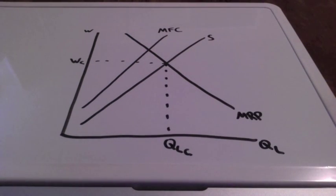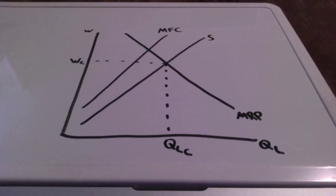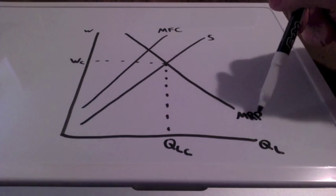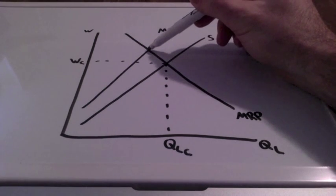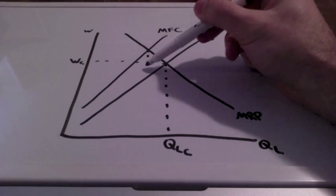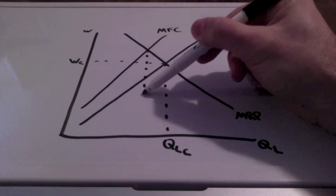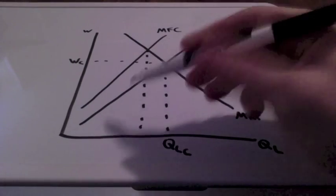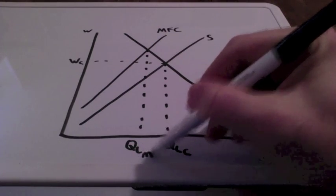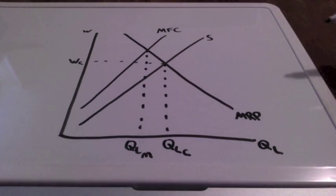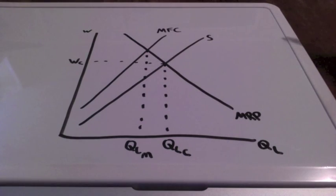So the profit-maximizing quantity of labor that the monopsony will hire is at the intersection where marginal revenue product meets marginal factor cost, which is right here. This intersection represents QLM — the quantity of labor that the firm is going to hire.